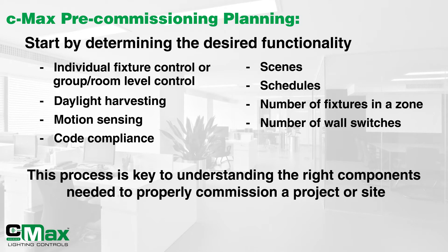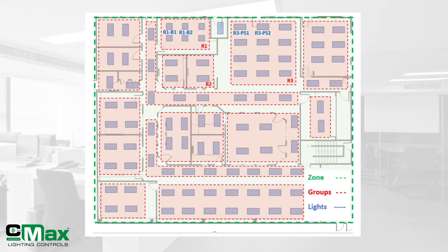Often an installation layout comes in handy to help plan for the desired functional requirements. Here is an example of an installation layout that shows the zone in the green boundary, various groups in the red boundary, and individual lights shown in blue.